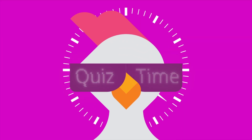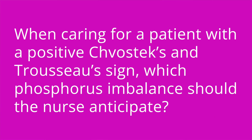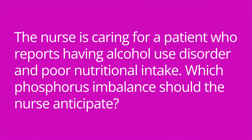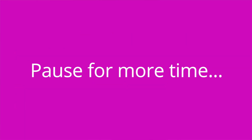Let's test your knowledge with some quiz questions. When caring for a patient with a positive Chvostek and Trousseau sign, which phosphorus imbalance should the nurse anticipate? — Hyperphosphatemia. The nurse is caring for a patient who reports having alcohol use disorder and poor nutritional intake. Which phosphorus imbalance should the nurse anticipate? — Hypophosphatemia.